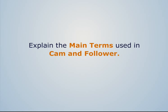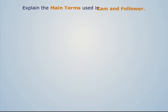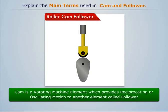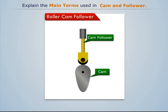Explain the main terms used in cam and follower. We know that a cam is a rotating machine element which provides reciprocating or oscillating motion to another element called a follower. Now let's discuss the important terms used in cam and follower.